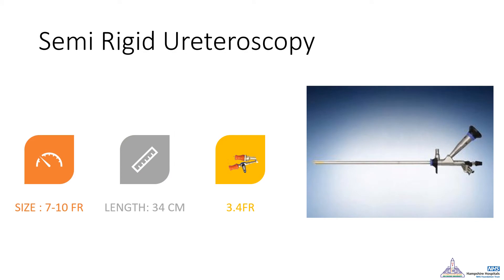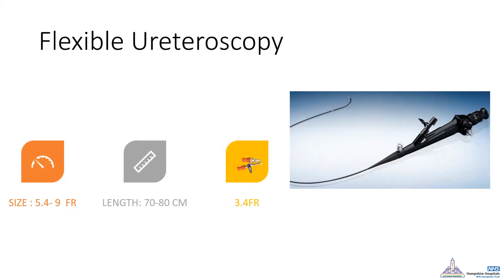The semi-rigid ureteroscope, also a very important urology tool, comes in diameters ranging from 7 French (the skinny one) to the larger 10 French scope. Its length is usually around 34 cm and its working channel is usually 3.4 French in diameter. The flexible ureteroscope varies from 5.9 to 9 French in diameter, with a length of usually around 80 cm and a 3.4 French working channel diameter.